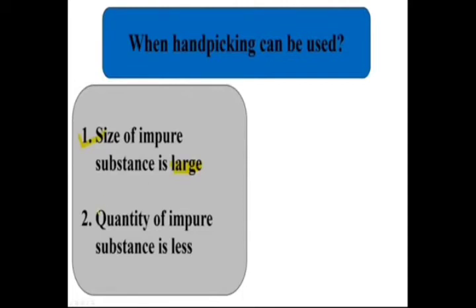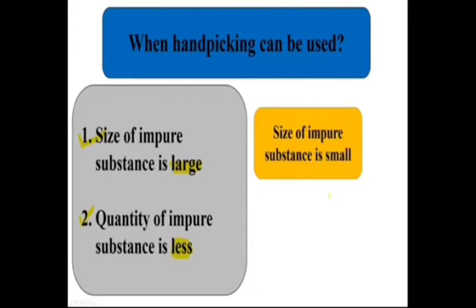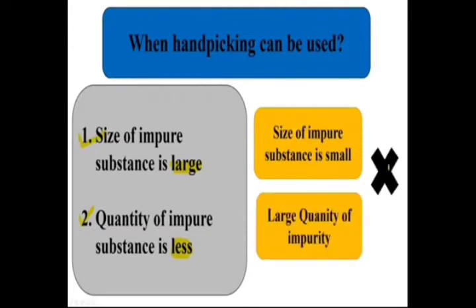In the previous class we concluded with where hand picking can be used. If the size of the impure substance is large or the quantity of impure substance is less, you can use hand picking. If the size of impure substance is small or a large quantity of impurity is present, this method is not possible.